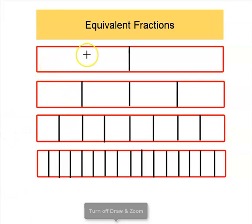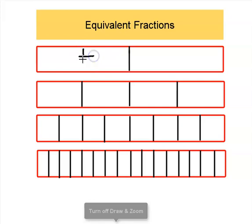Notice this top bar is split into two equal pieces. Right here where my cursor is, is one piece out of a total of two pieces. So I'm going to go ahead and label this piece right here. This is one out of two, so that is the fraction one half. This is one half, and this is also one half because this piece over here is also one piece out of a total of two.